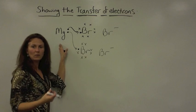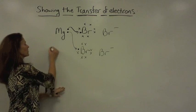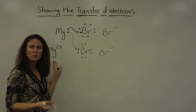And the magnesium has completely lost its two electrons, so it has formed the ion of magnesium with a two plus charge.